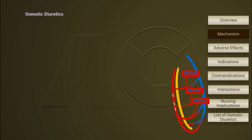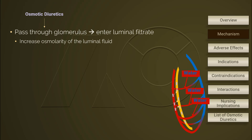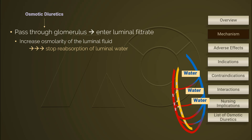Osmotic diuretics do not create strong diuresis. They are simple hydrophilic substances that can be easily filtered and passed through the membrane from the glomerulus into the luminal filtrate. These medications increase osmolarity of the filtrate. Reabsorption of water is then disturbed.